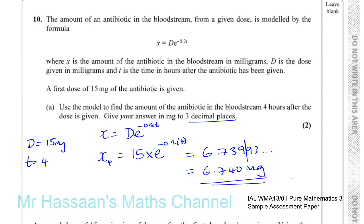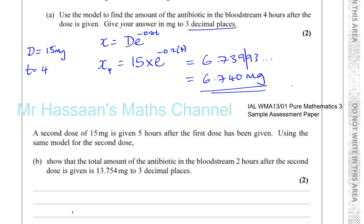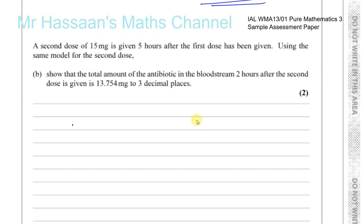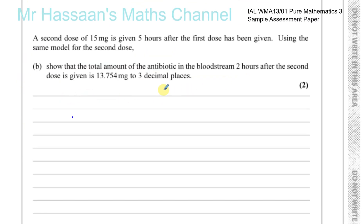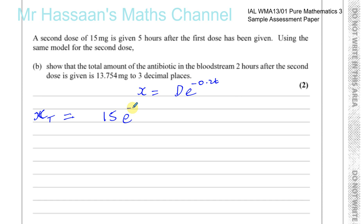Now part B. It says the second dose of 15 milligrams is given five hours after the first dose has been given. Using the same model for the second dose, show that the total amount of the antibiotic in the bloodstream two hours after the second dose is given is 13.754. So we've got the formula X equals D times E to the power of minus 0.2T. We want to find the total dose. So it says five hours after the first dose has been given, another dose is given.